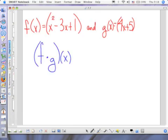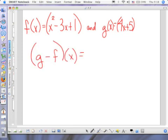In this next example, I still have F of X and G of X. But now I want you to take the G function and subtract from it the F function. So you start with your G function, which is 4X plus 5.